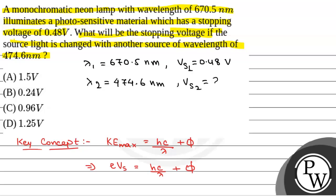Now, we have to calculate Vs2. So, we will just put the values in the equation e into Vs equals hc by lambda plus phi. We will have e into 0.48 is equal to—the value of hc in electron volt nanometer is 1240—so 1240 by 670.5 plus phi, that is work function of metal.